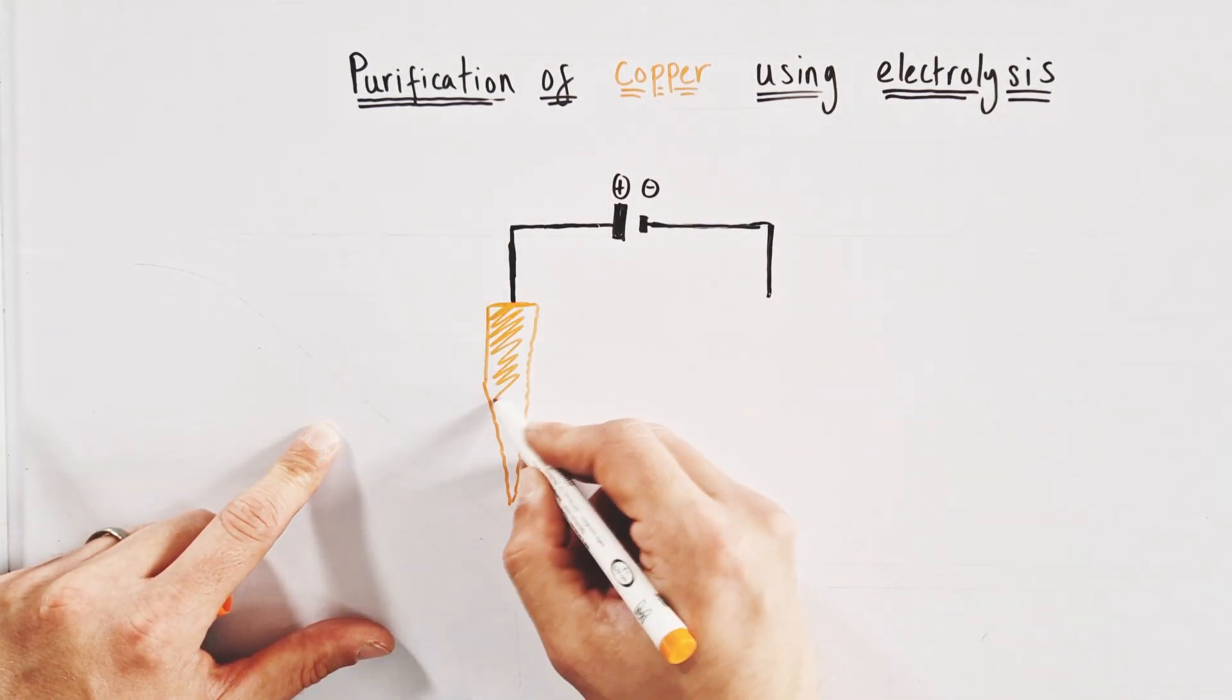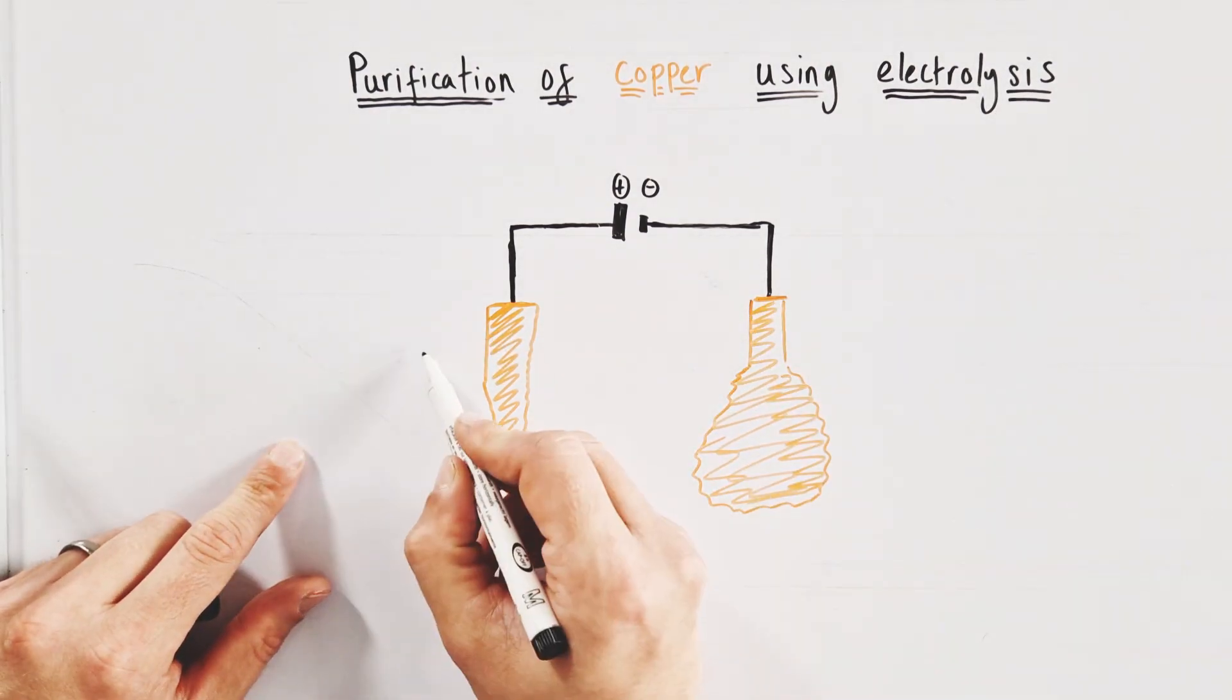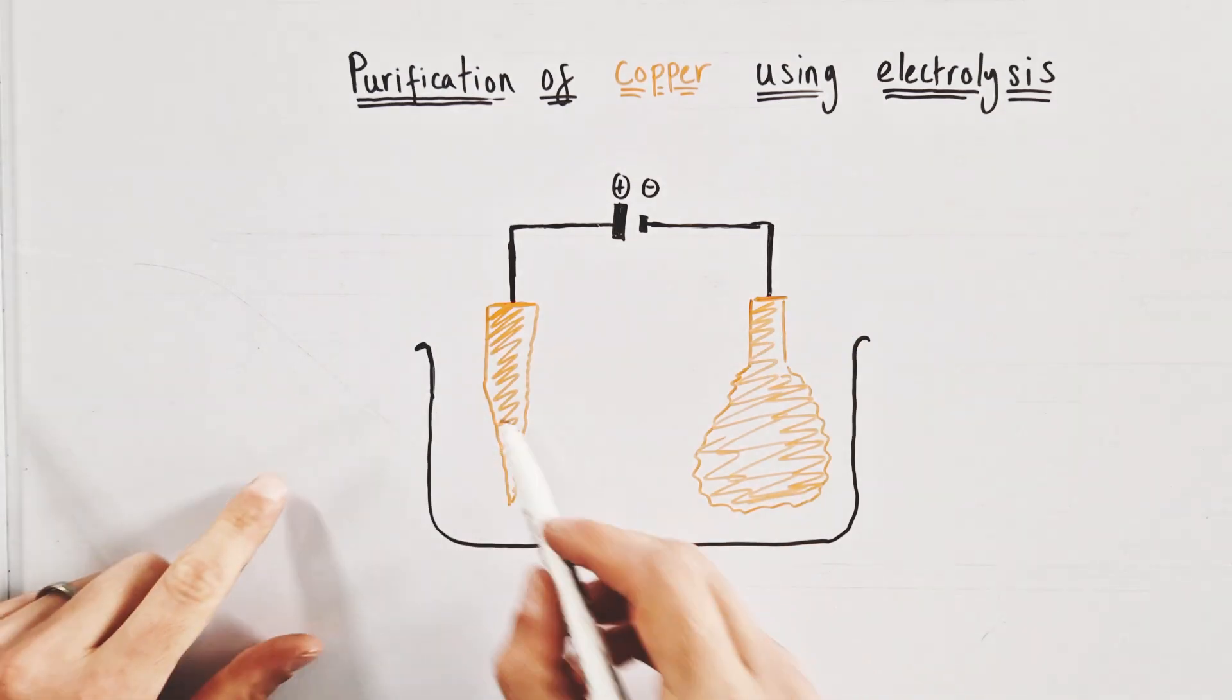The left-hand positive electrode is known as the anode and is made of impure copper. The right-hand negative electrode is known as the cathode and this is collecting pure copper over time.